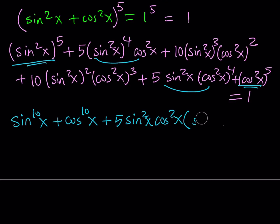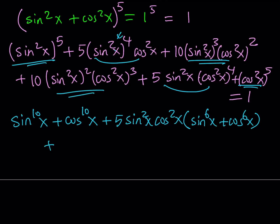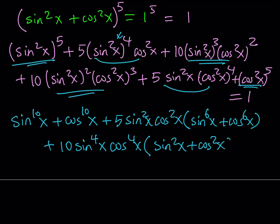When I take that out, I actually get sine x to the 6th power and cosine x to the 6th power inside the parentheses. And then for the terms with coefficient 10, our common factor this time is the 4th power: 10 sine x to the 4th times cosine x to the 4th, multiplied by sine squared x plus cosine squared x inside the parentheses, which equals 1. And as you know, this whole thing equals 1 as well.